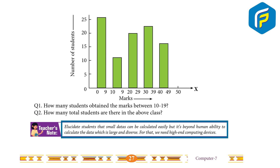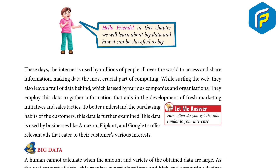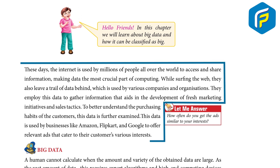Hello friends, in this chapter we will learn about big data and how it can be classified as big. These days the internet is used by millions of people all over the world to access and share information, making data the most crucial part of computing. While surfing the web, they also leave a trail of data behind, which is used by various companies and organizations.